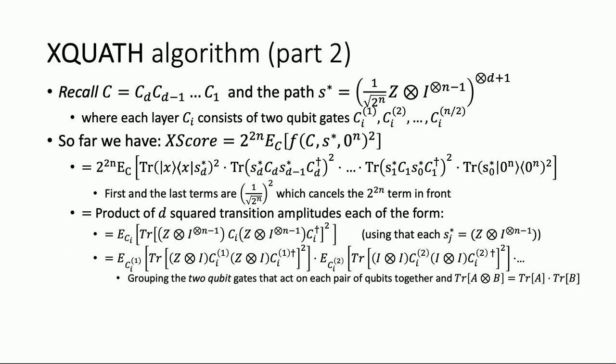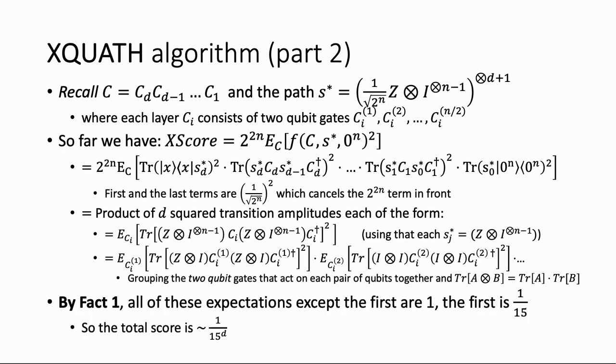Now we can apply Fact one. For the gate acting on the first qubit — where S-star has Z tensor I — neither of the two-qubit Pauli operators is the identity. By Fact one, that gives one over fifteen. For all the other gates, both Paulis are identities, giving one. So the final answer is one over fifteen, and since we have a product of D of these, we get one over fifteen to the D. That's the entire algorithm — very beautiful and very simple.